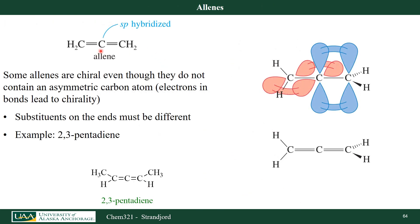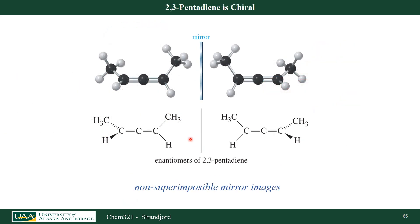There's another type: allenes, which have two double bonds right next to each other. The pi bonds must be at 90 degrees to each other, so neither bond can rotate, giving different stereoisomers. In one case hydrogens are in the plane of the board; in the other, one hydrogen points out of the board and one into it. An example is 2,3-pentadiene, where the two double bonds share the same central carbon. The CH3 groups can be on the same side or opposite sides — these are non-superimposable mirror images and therefore enantiomers.